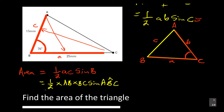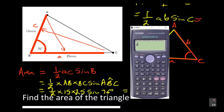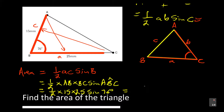To find the final answer: area equals one-half times AB, which is 15, times BC, which is 25, times sine 76 degrees. Using a calculator: one-half times 15 times 25 times sine 76 equals 181.93. So the answer is 181.93.